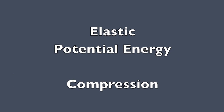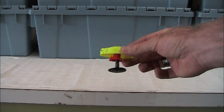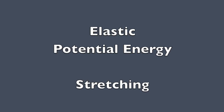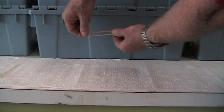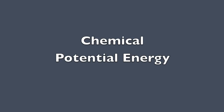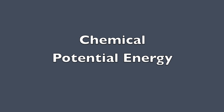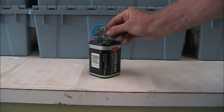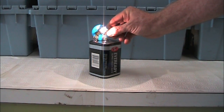We are going to start by taking a look at a few different types of potential energy. Here I have a spring-loaded bug toy. I compress the spring — potential energy — that is transformed into kinetic energy. Here I am stretching a rubber band — potential energy — that can be converted into... ow! Here I have a battery with stored chemical energy. If I attach a light bulb to the terminals, chemical energy is transformed into light.